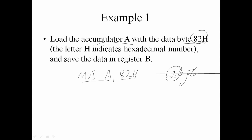Store the byte of data in register B. We use the MVI instruction — MVI B, data. This is also a 2-byte instruction. The instruction is MOV B — loading data into register B.